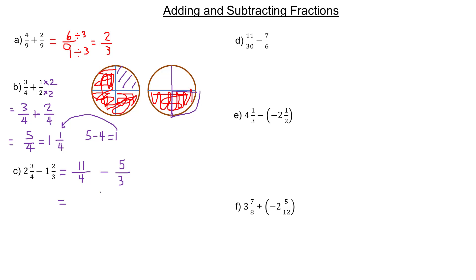If you think of the multiples of four — counting by four — it's four, eight, twelve, sixteen, et cetera. And for three, if you count by three: three, six, nine, twelve, fifteen, et cetera.